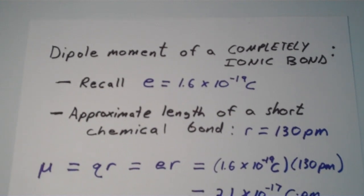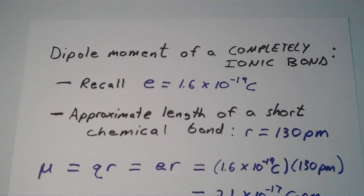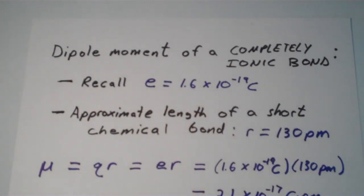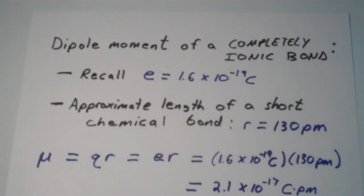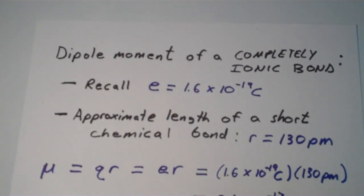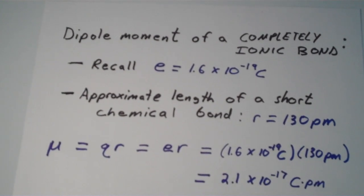The way that you do that is, mu is equal to QR. Well, Q is the same thing as E because we're talking about protons and electrons here. So mu is equal to QR, it's equal to ER. You just plug E in, plug R in, that gives you 2.1 times 10 to the negative 17 coulombs times picometers.